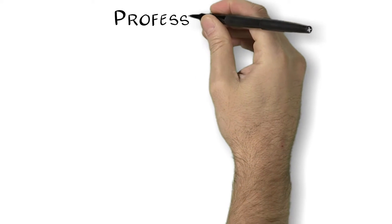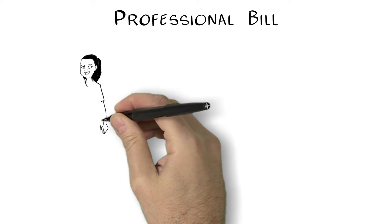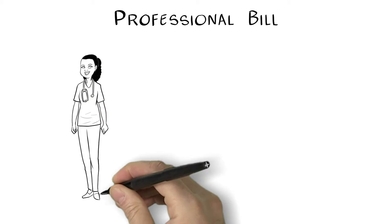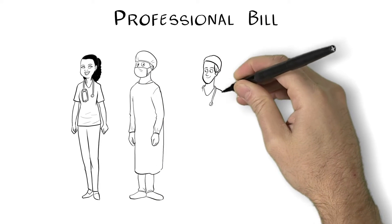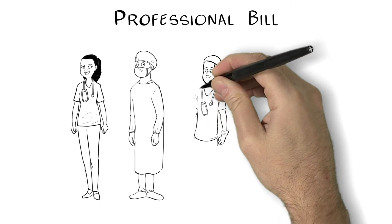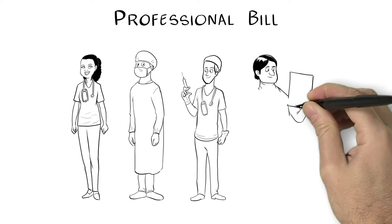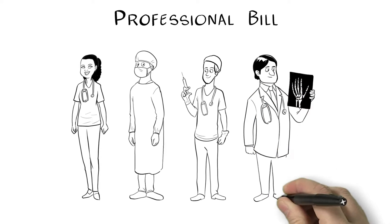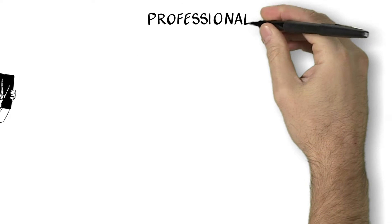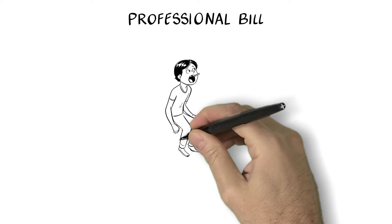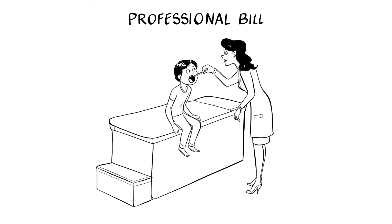You may also receive one or more professional bills, often called doctor's bills. These bills can come from different doctors, such as the emergency room doctor, surgeon, or anesthesiologist. Even if you don't see a specific doctor in person, like a radiologist, they are instrumental in contributing to your care. A professional bill may also come from doctors you see outside the hospital, such as your primary care doctor or specialist.